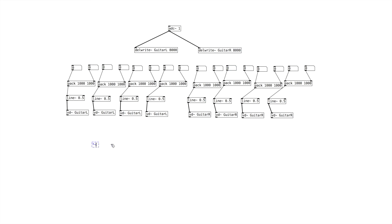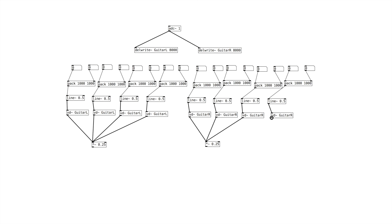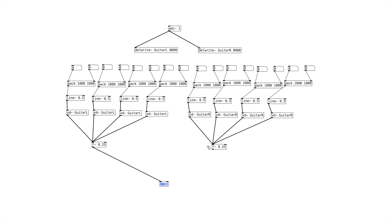Let's go ahead and create a single multiplier — we'll set this one to 0.25. Then let's run all of these connections. Let's go ahead and create our DAC — DAC 2. Attach that: we have the left, and over here we have the right.